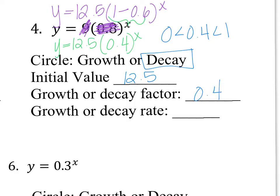My decay rate: rate equals 1 minus b with decay. So I'll have 1 minus 0.4, which is coincidentally 0.6 as my decay rate.